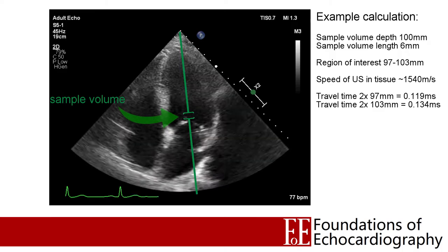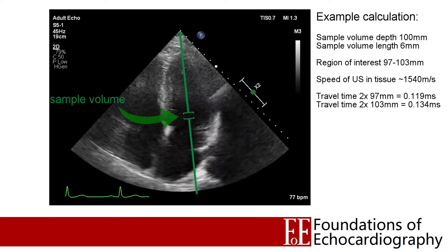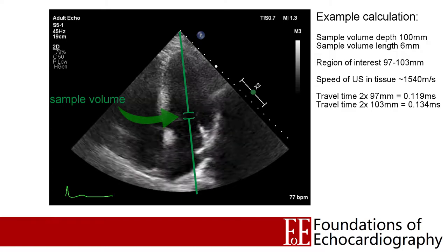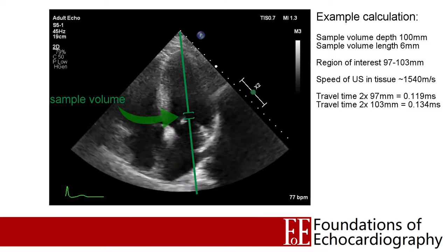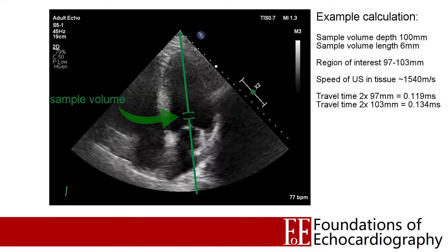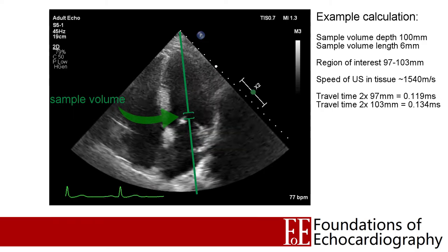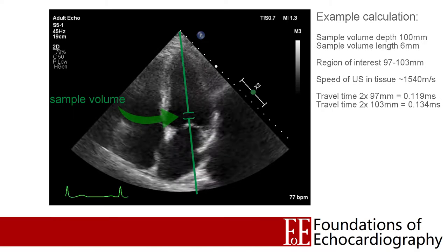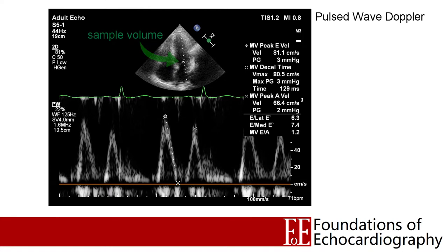The ultrasound software knows that if it sends out a pulse of ultrasound and it returns before 119 microseconds, then it won't have had time to reach the sample volume and return. Likewise any signal returning later than 134 microseconds would have been reflected from a structure deeper than the sample volume. It knows to ignore all information returning outside of that gate, and only tell us about information that arrives between 119 and 134 microseconds after the pulse was emitted. By sending several thousand pulses of ultrasound along this single scan line each second, the ultrasound software is able to measure the shift in phase between the transmitted and received waves, then use the Doppler equation to calculate the velocity.